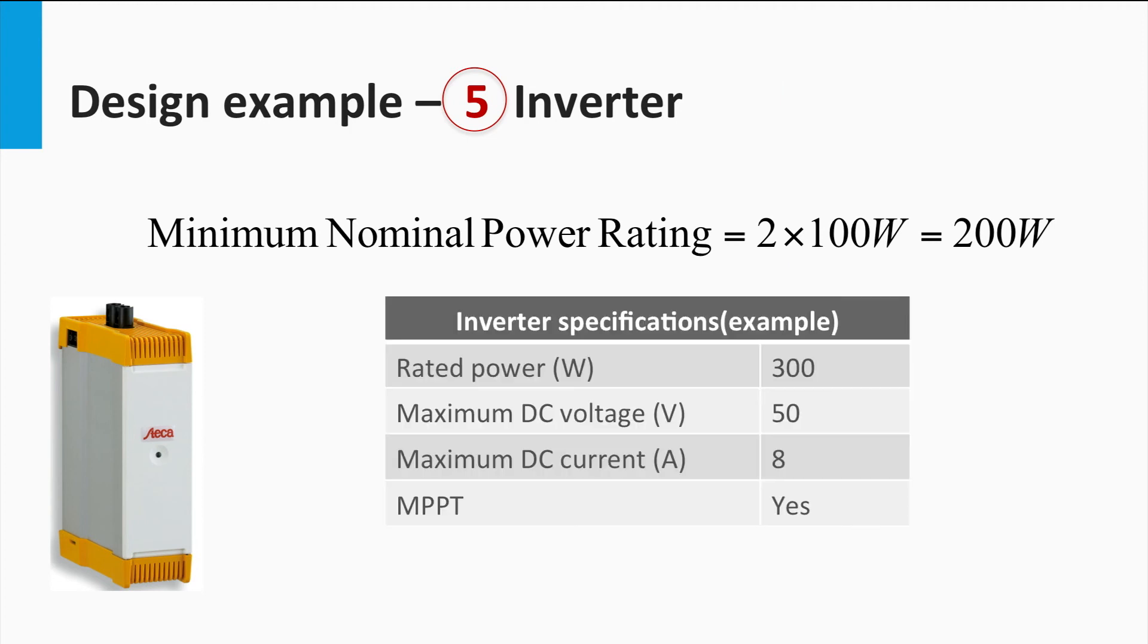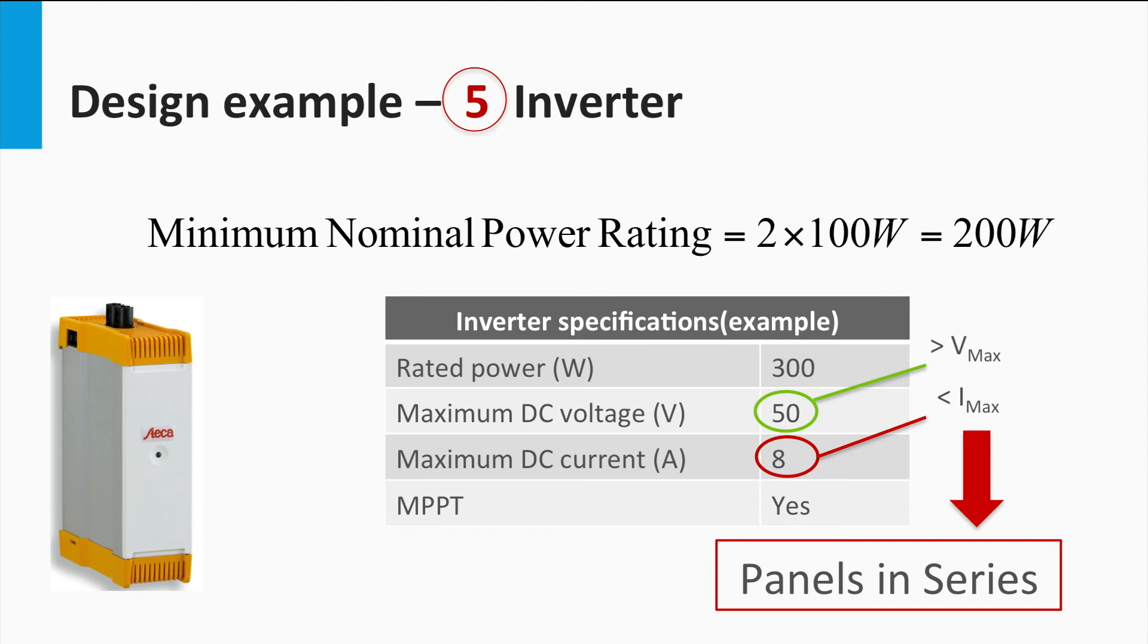Let us look at the operational parameters of an example inverter that fits the bill with respect to the required minimum power rating. Note that this inverter has a maximum power point tracking feature, thereby making the panels work at maximum power point. Looking at the IV ratings of the DC side of the inverter, we see that the maximum DC input voltage for the inverter is greater than the maximum voltage.